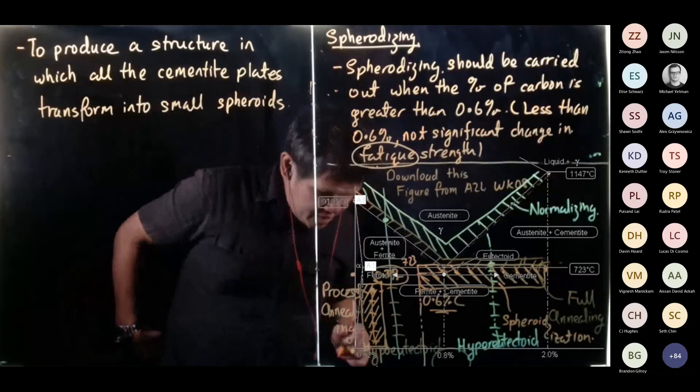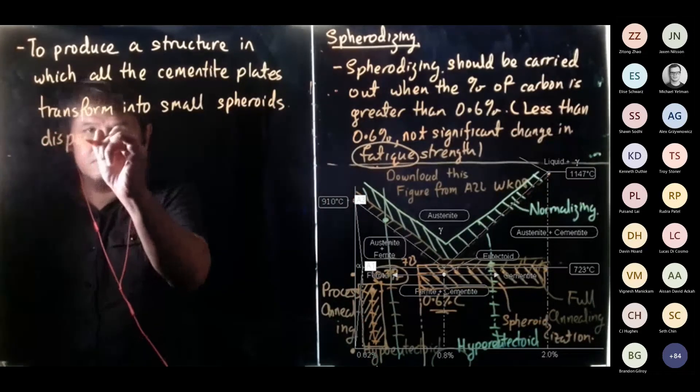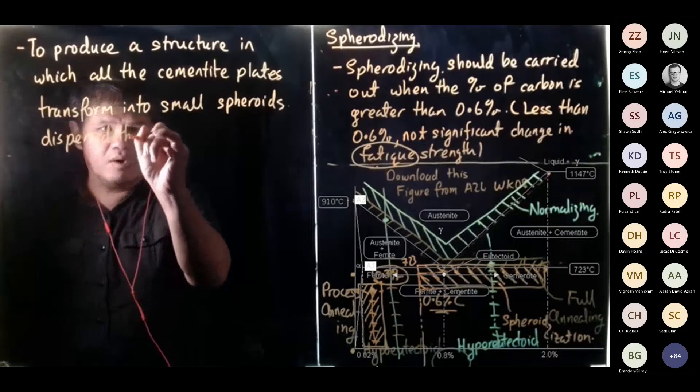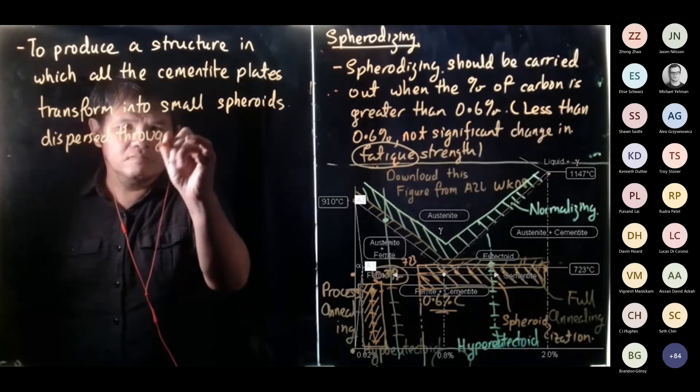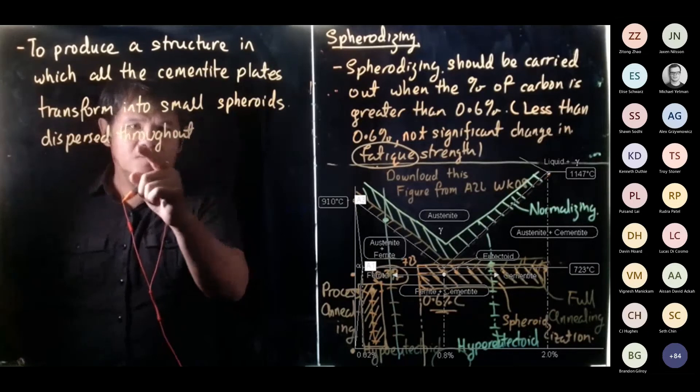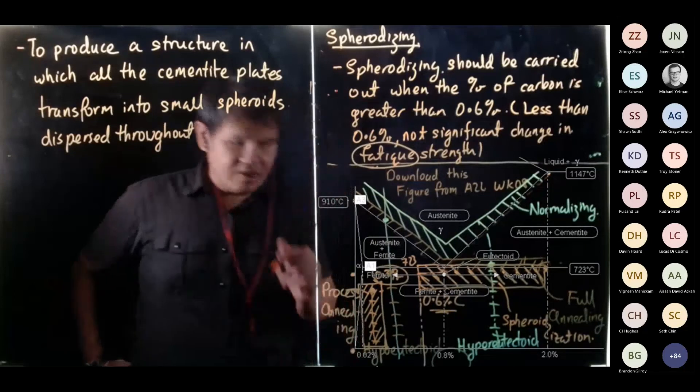Okay, small spheroids dispersed throughout the cementite matrix.